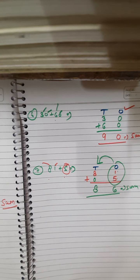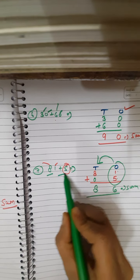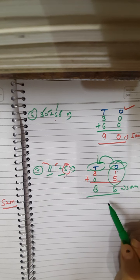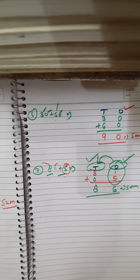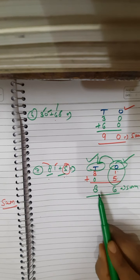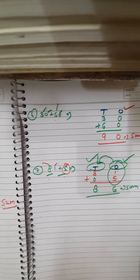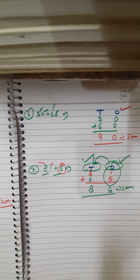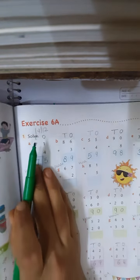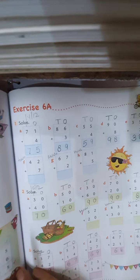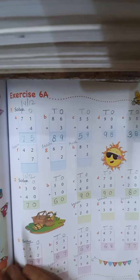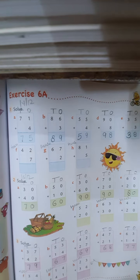So the rule of addition is: we just need to arrange the numbers as per their place values, then start our addition with the 1s place value, then move to the 10s place value, and write the answers in their separate place rooms. In exercise 6a, do questions one and two on your own. Do practice at your own. That's all for today — stay home, stay safe. Thank you.